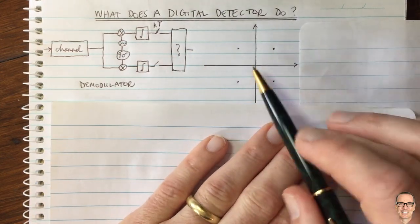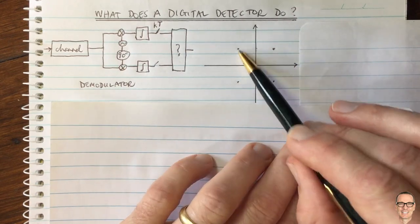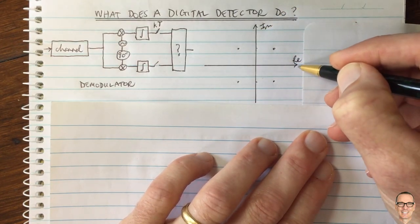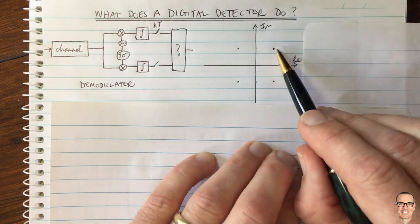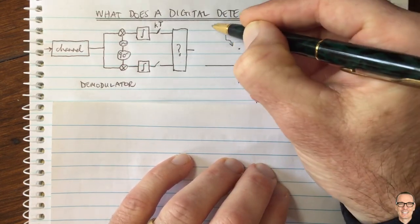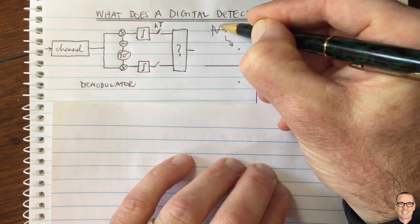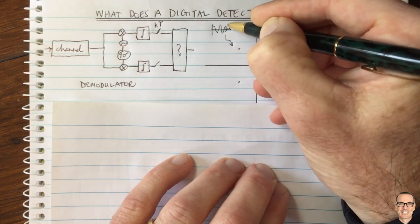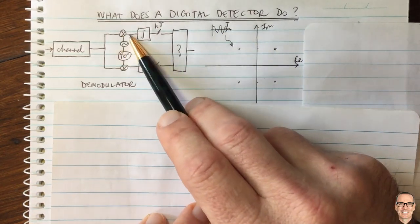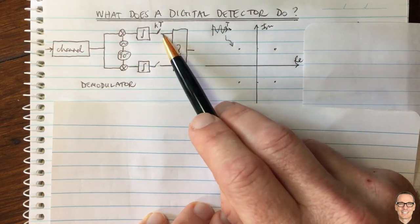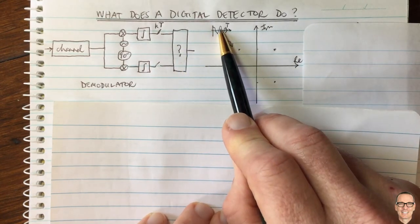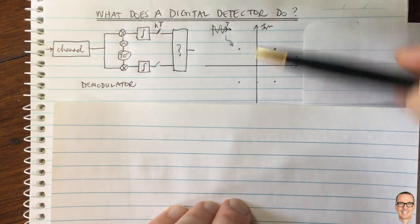Consider a case with four constellation points — four different symbols that could be sent. We call these real and imaginary, but we can also think of them as the cosine wave component and the sine wave component. Each of these points represents a sinusoidal signal that has come from the transmitter over a period T. You've correlated it with a cosine and with a sine — projecting it in the direction of cosine and sine — then sampled the output to see how much of each. Here we have the cosine component and here the sine component.